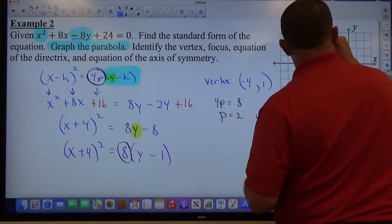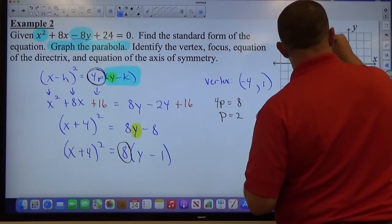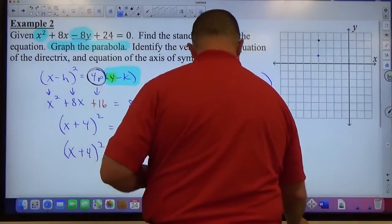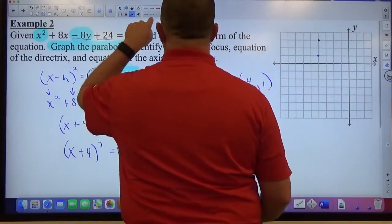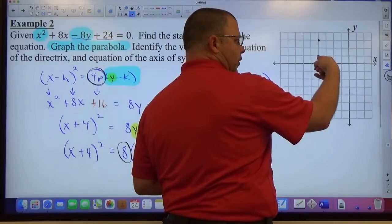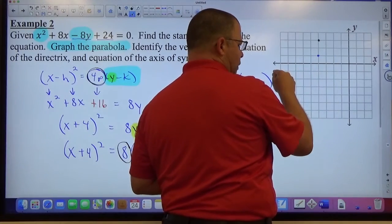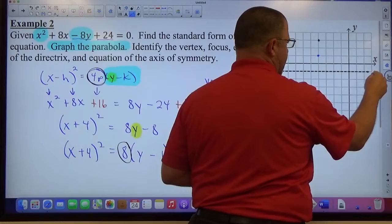I'm going to go down 2 for my directrix. And I can see very clearly, this is positive 1. If I go down 2, I get to negative 1. So this is my directrix right here.